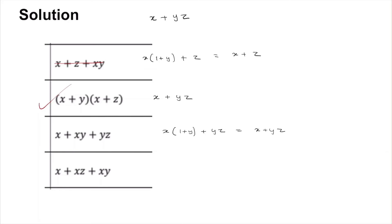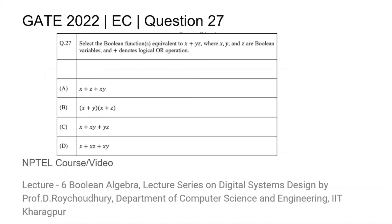And in the fourth one, you can actually take X common for all three, and this becomes 1 or Z or Y, and this is just equal to X. So the fourth one is wrong. So the correct answers are B and C.